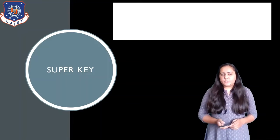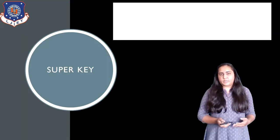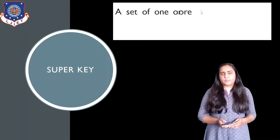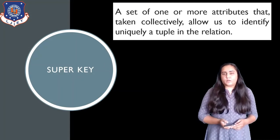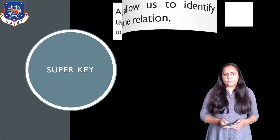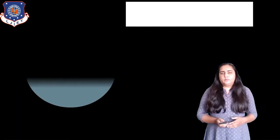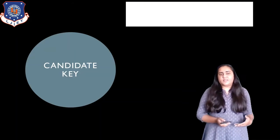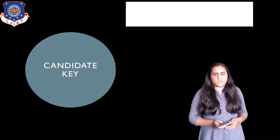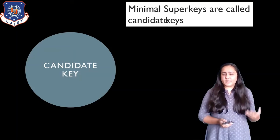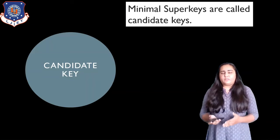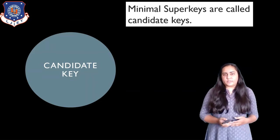Now I'm going to explain what a super key is in a relational model. A super key is a set of one or more attributes that, taken collectively, allow us to uniquely identify a tuple in the relation. A candidate key is a minimal super key. Let's see both with an example.